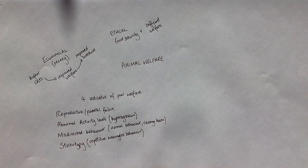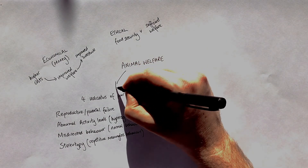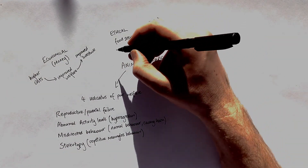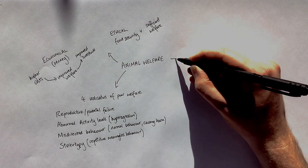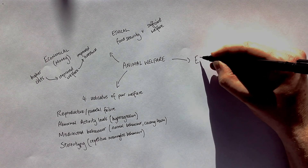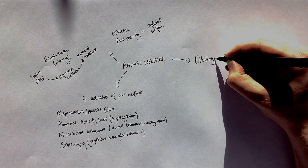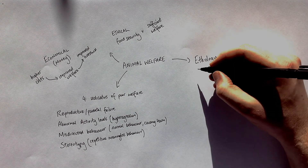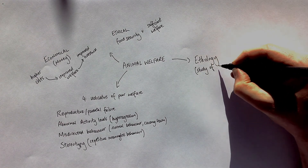So we've got RAMS. If the animals are doing any of these four things, it's a sign of poor animal welfare. The last thing we need to know about is ethology, which is the study of animal behaviour.